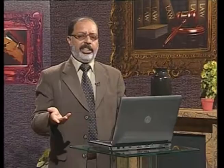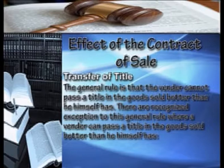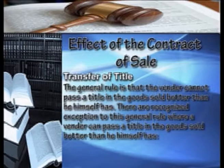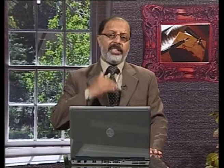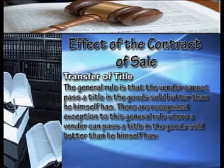The second effect is transfer of title. The general rule is that a vendor cannot pass a title in the goods sold better than he himself has. Whatever title the seller holds, only that title can be transferred — if he is the owner he can transfer ownership; if goods are pledged, he can only transfer the pledge.